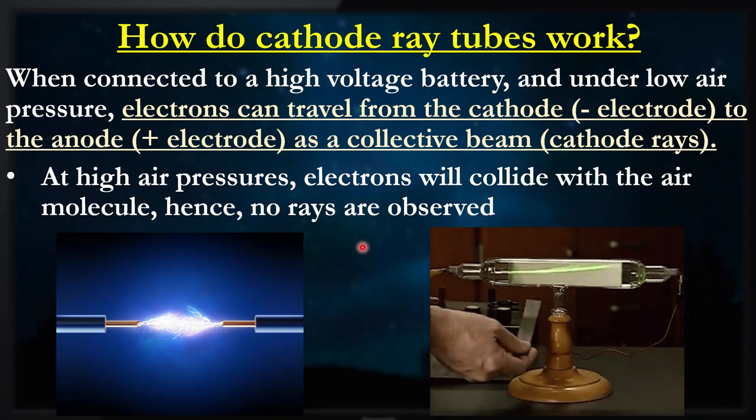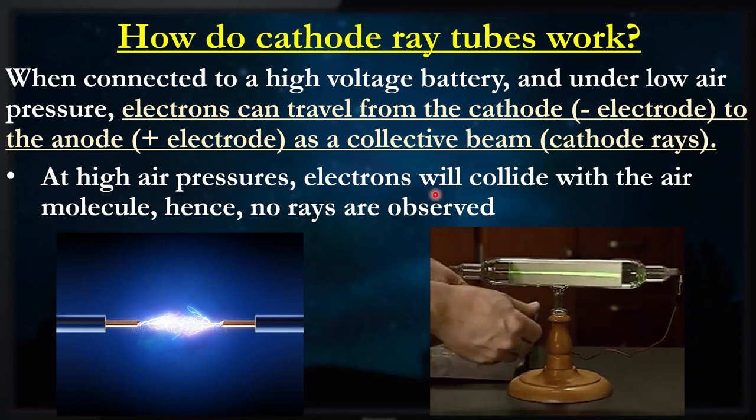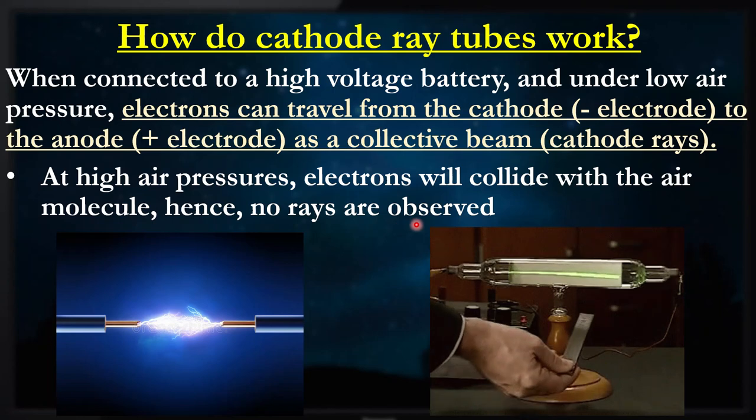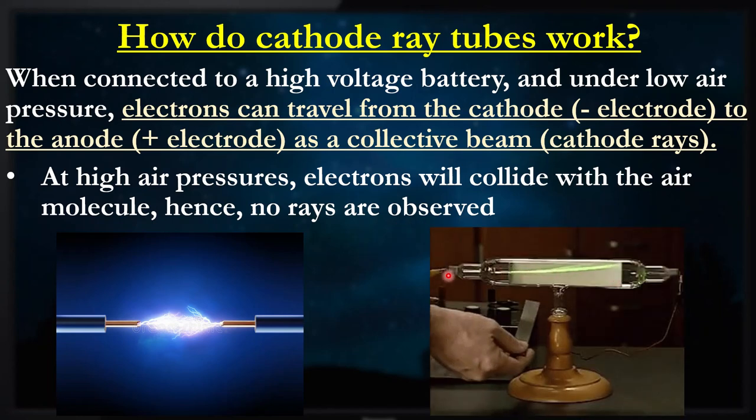This is the first dot point we're covering: early experiments examining the nature of cathode rays. How do cathode rays work? At high air pressures, when we have maybe 99 percent of air inside, electrons will collide with the air molecule, hence no rays are observed. The fact that you see these rays here, that's the electrons coming through, and that's the beam of electrons coming through. That's how you actually see the cathode ray.